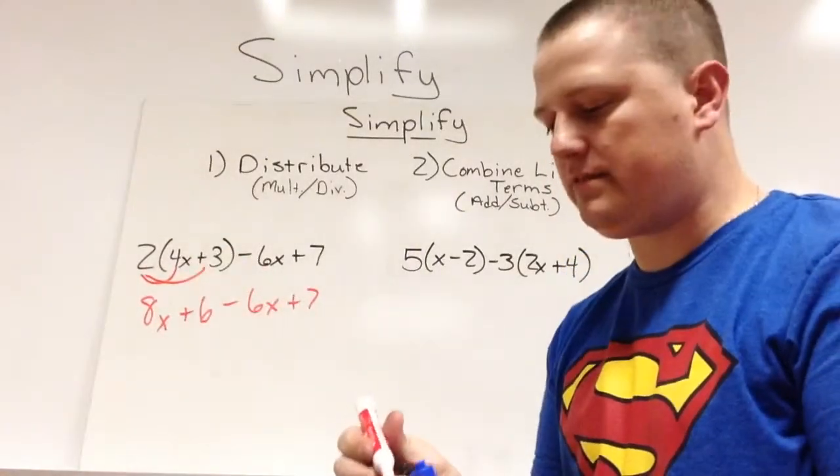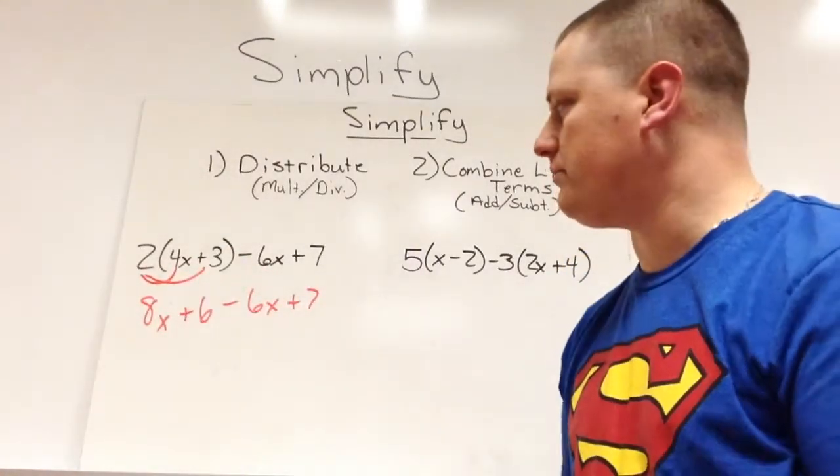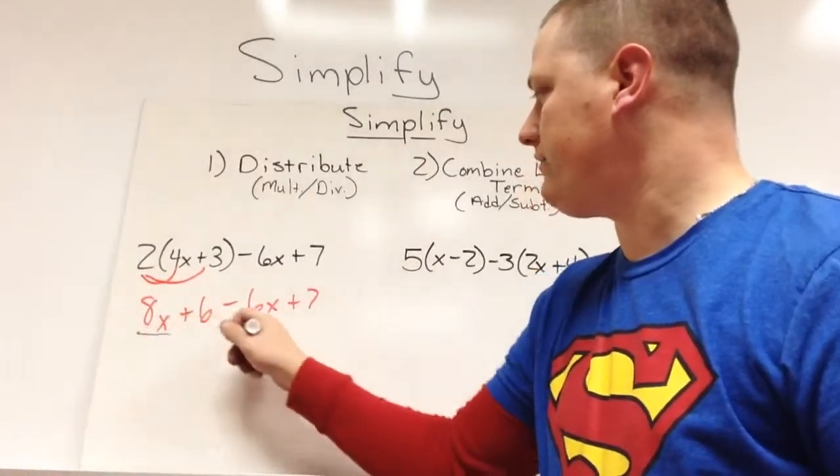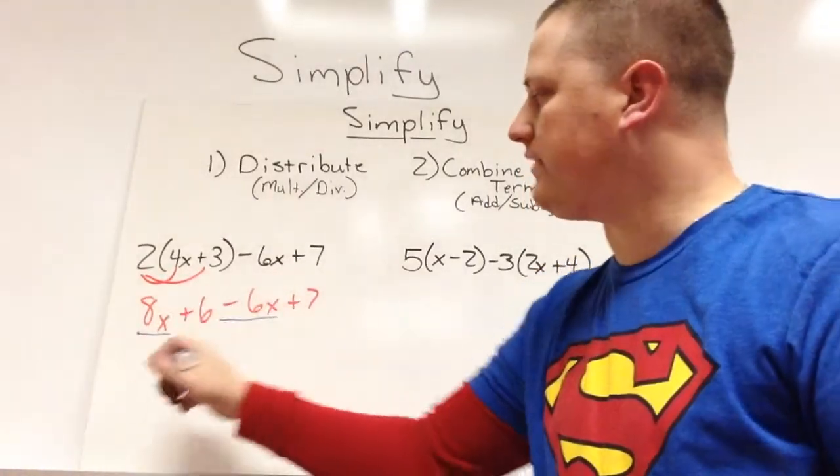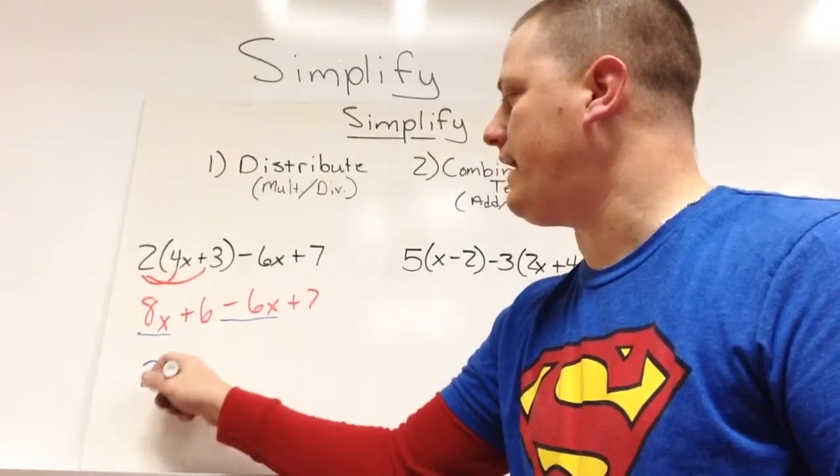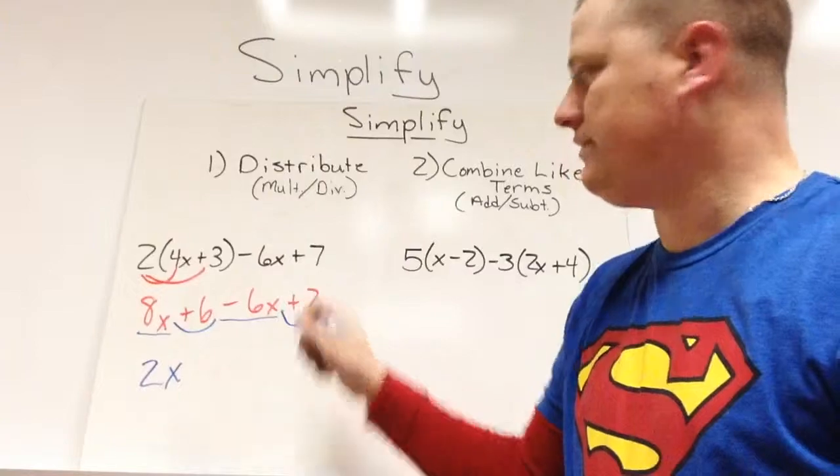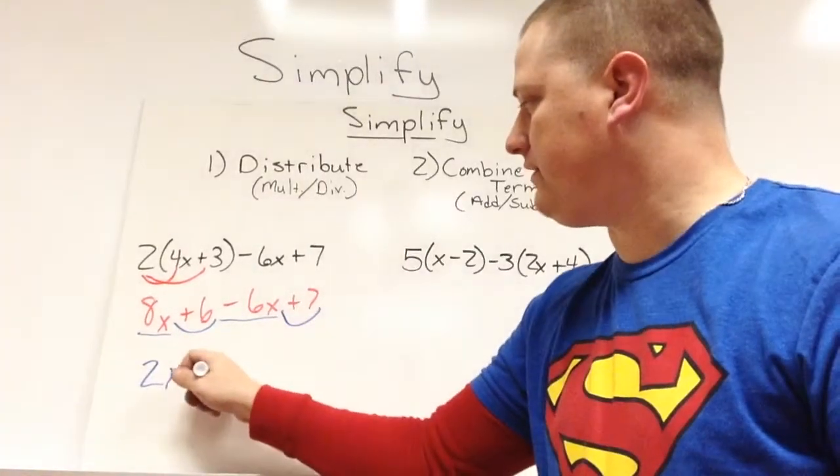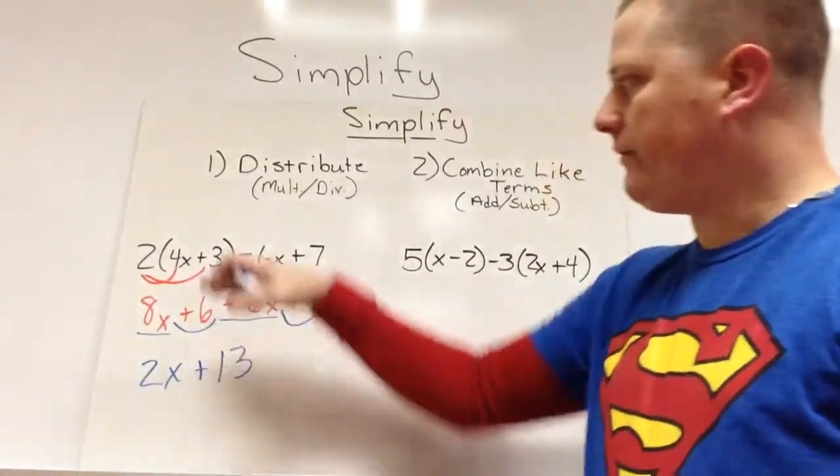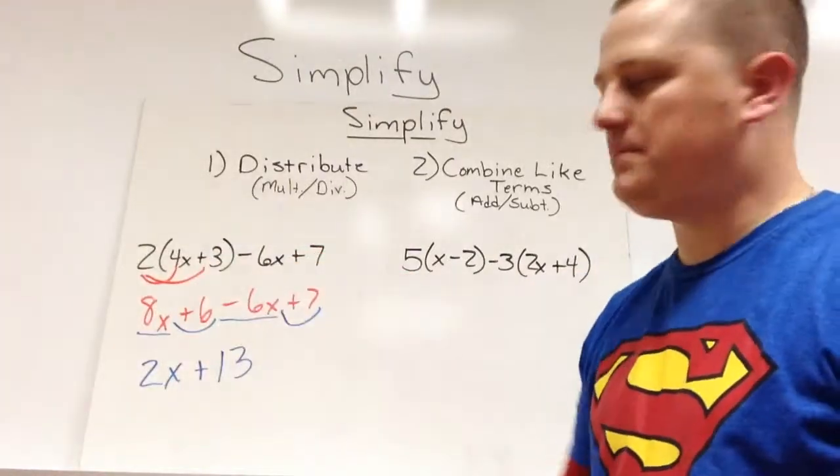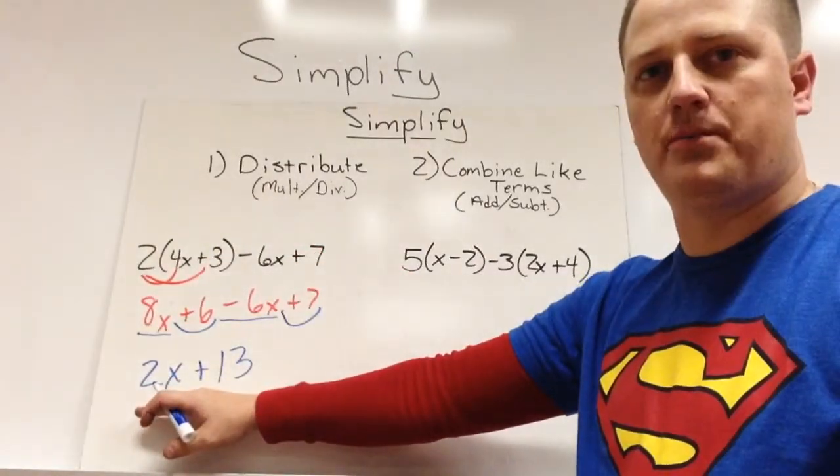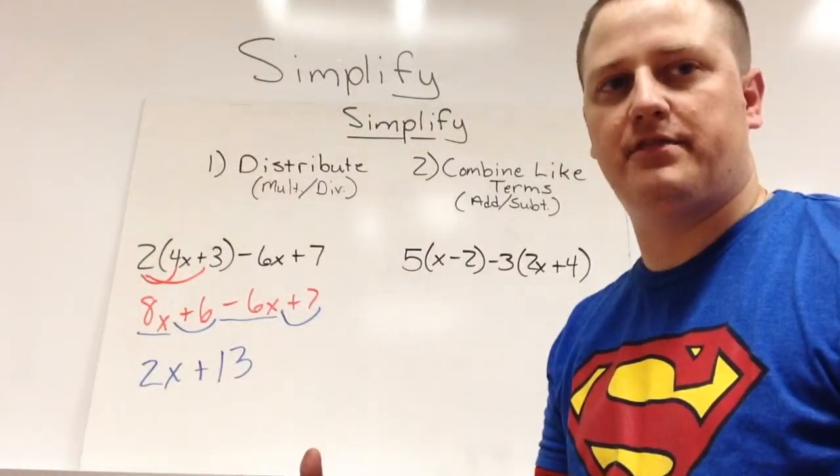No more parenthesis. We can combine like terms. 8x negative 6x, so 8 and negative 6 make 2x. Positive 6, positive 7 make positive 13. We've taken this long problem, turned it into this much shorter problem, and that's the idea of simplifying.